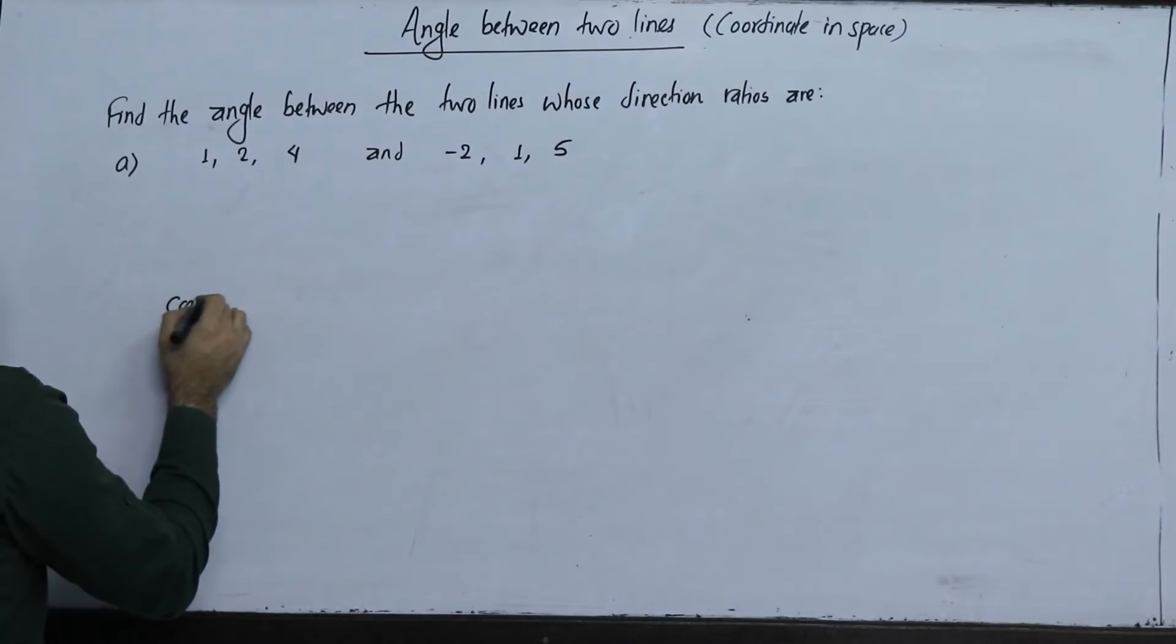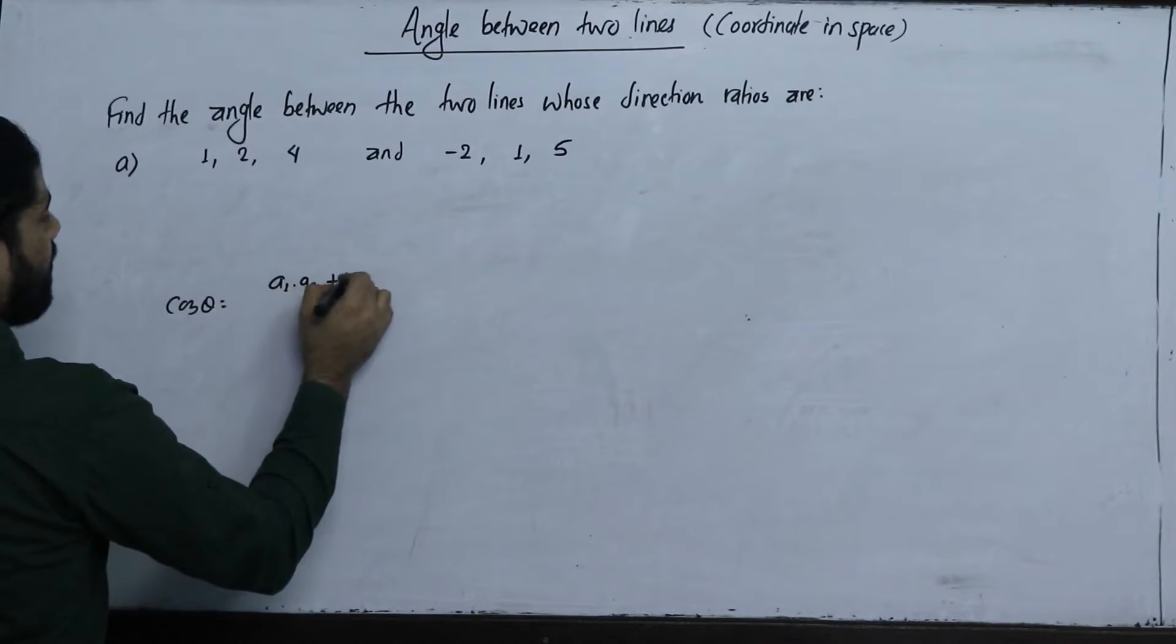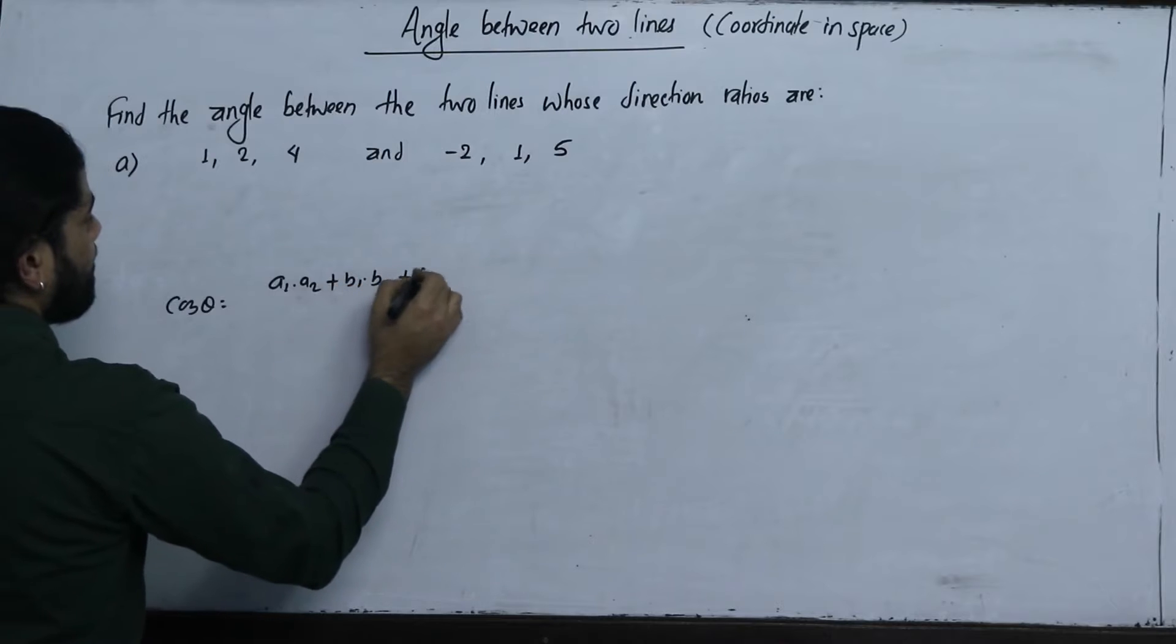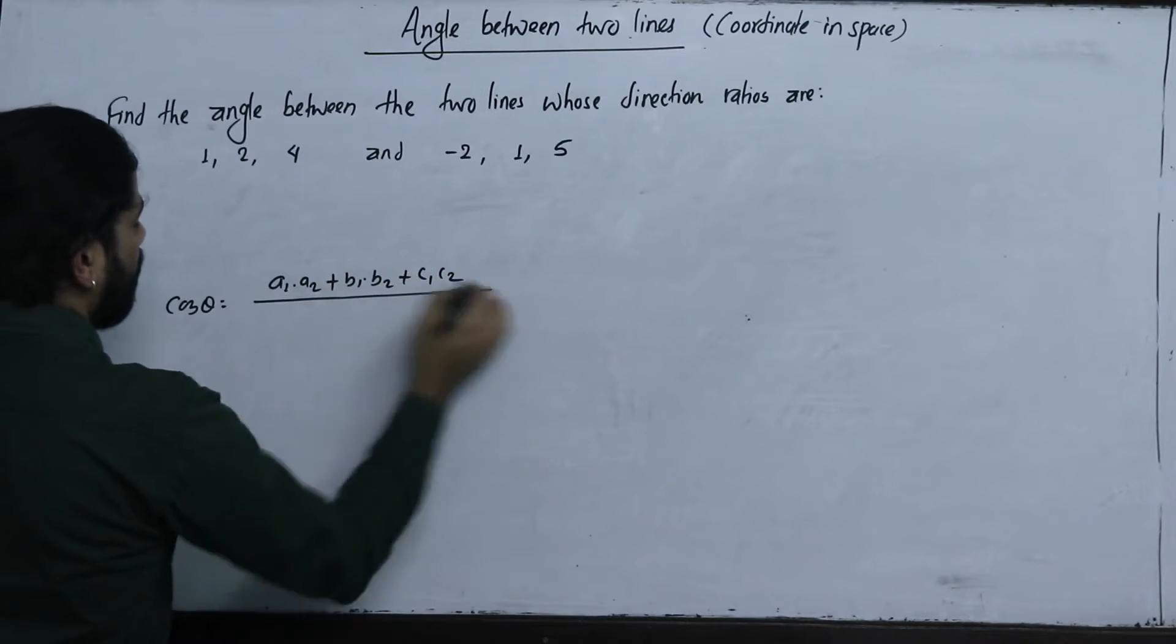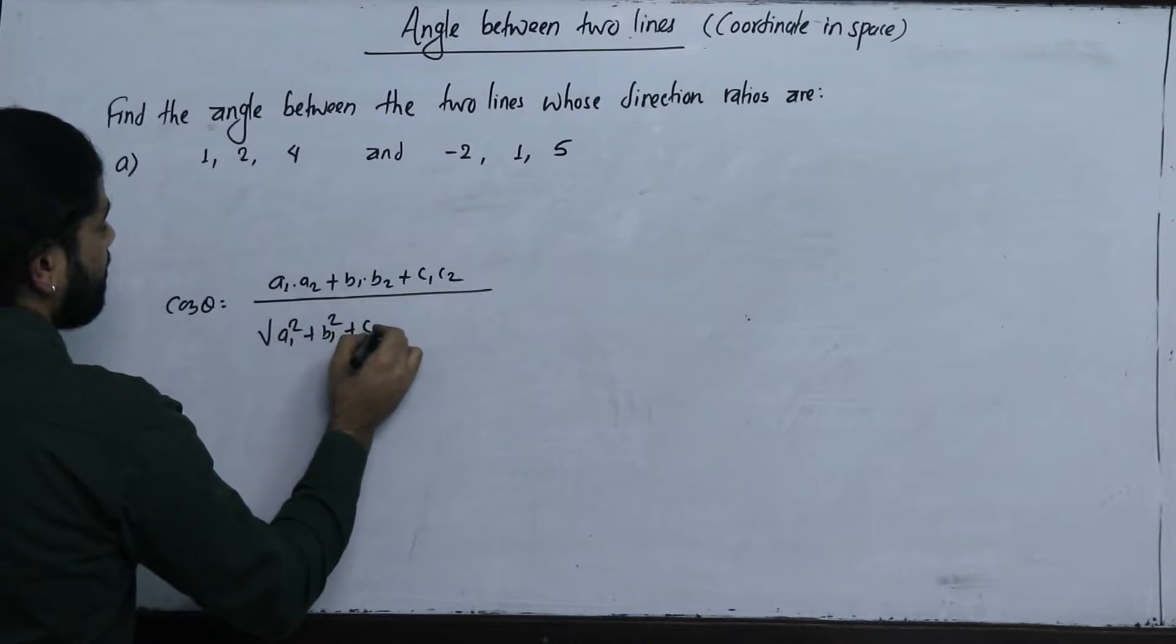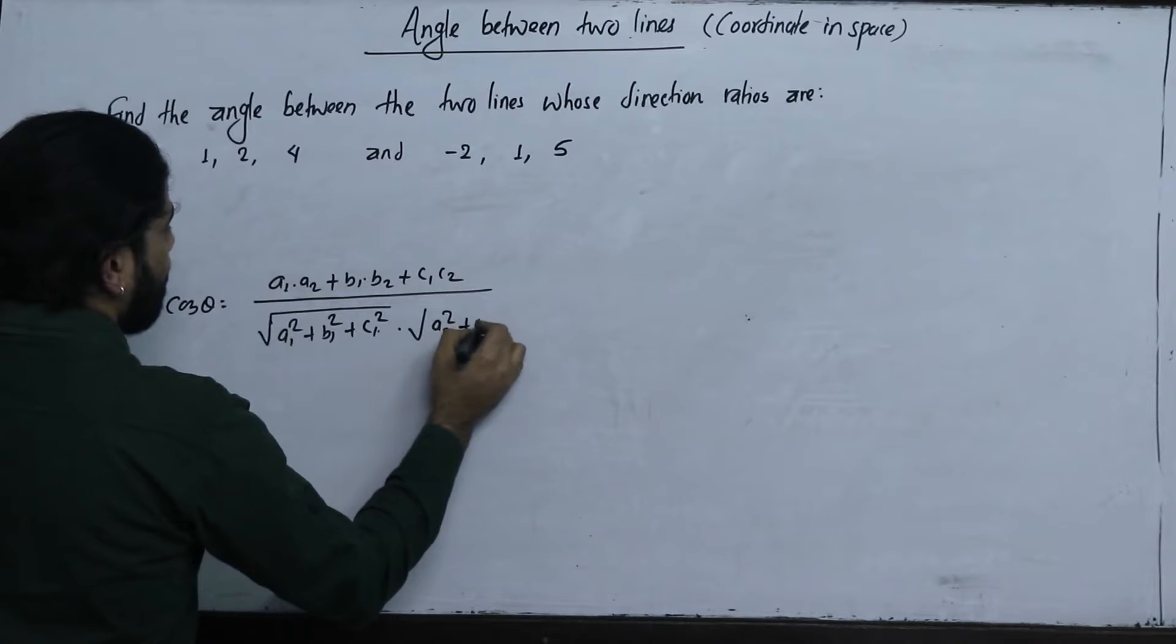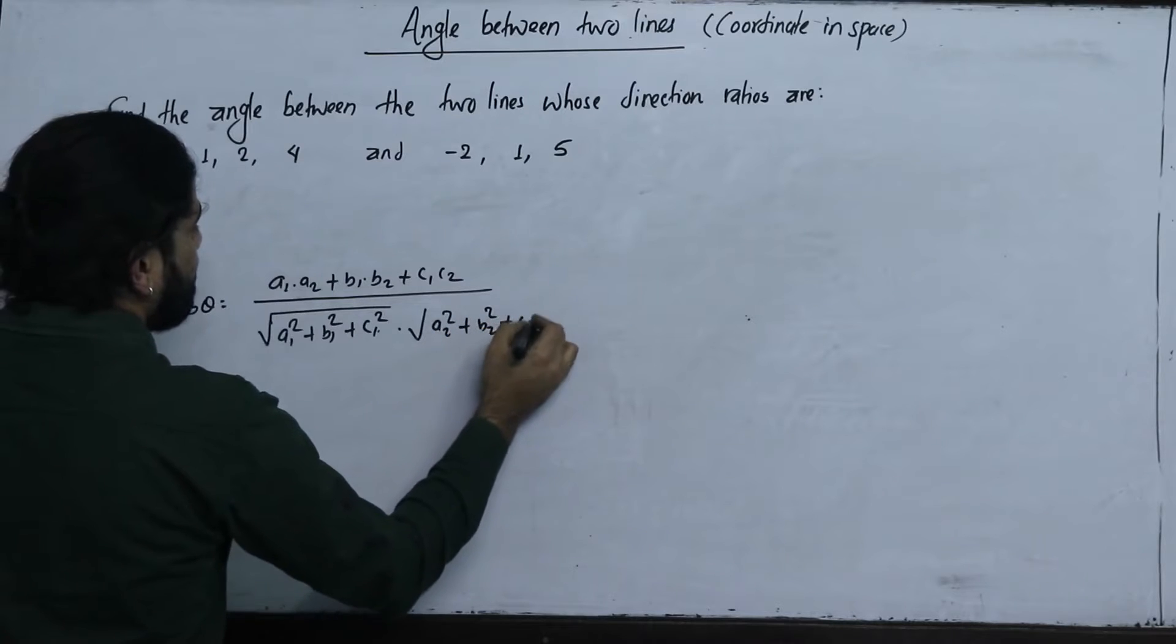The formula is cos theta equals a1a2 plus b1b2 plus c1c2 divided by square root of a1 square plus b1 square plus c1 square times a2 square plus b2 square plus c2 square.